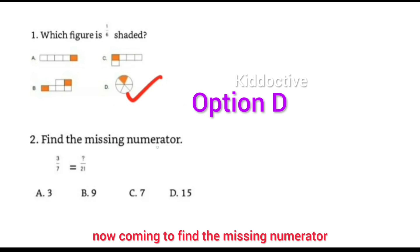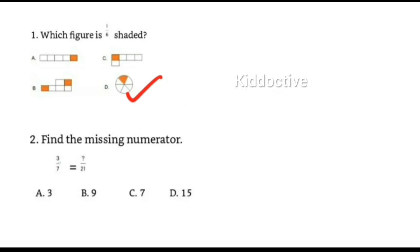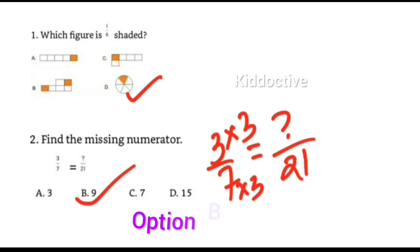to find the missing numerator. Here it's written: 3/7 equals what over 21. How are we going to check this? Seven threes are 21, so three threes are nine. The answer is nine.